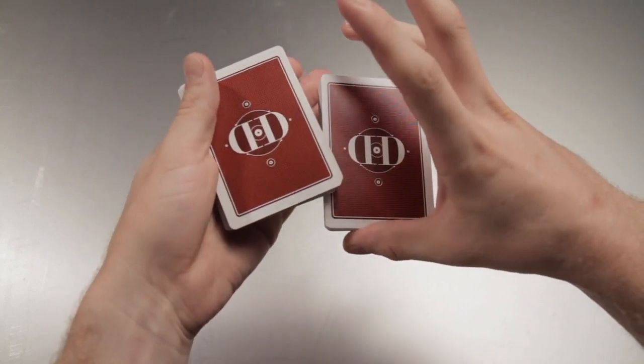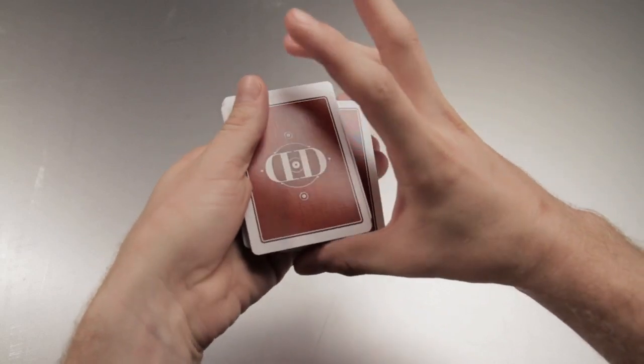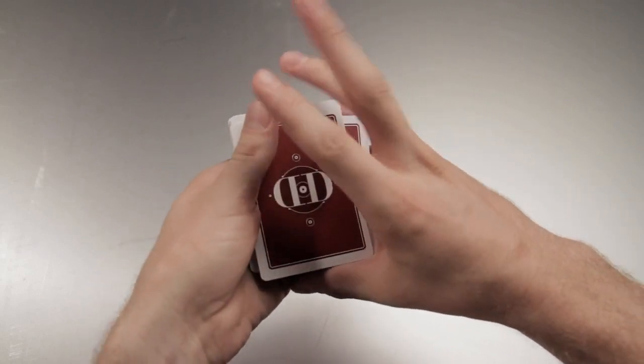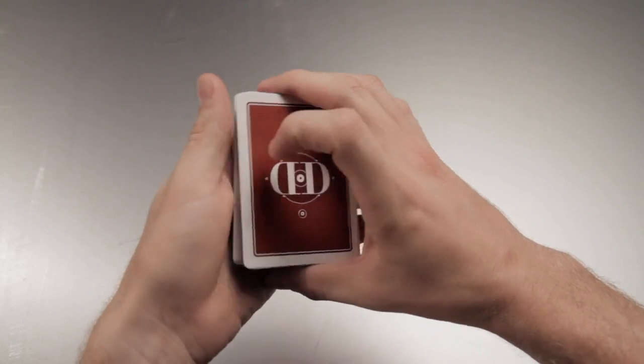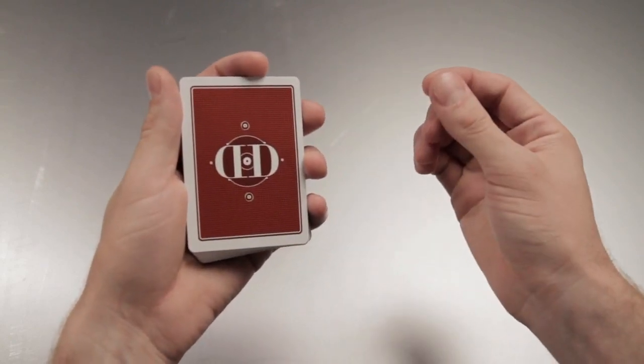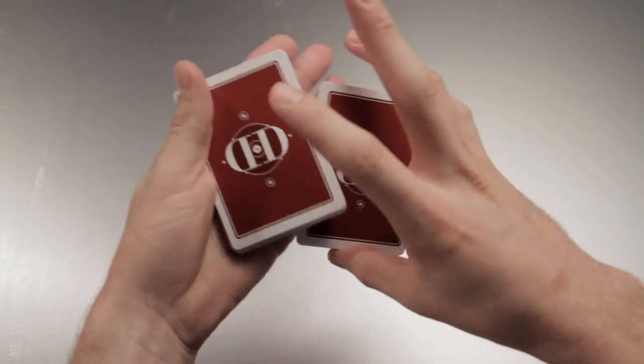This creates plenty of space for the fingers to bring both packets neatly together, and then you can use these extended fingers to help square the cards. Once again, this is an undercut.